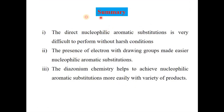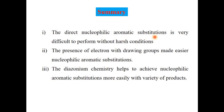In summary, direct nucleophilic aromatic substitution via the benzyne intermediate is very difficult, requiring harsh conditions, and benzyne itself is very unstable. The presence of electron-withdrawing groups activates the ring and allows aromatic substitution more easily via addition-elimination. Diazonium chemistry is very important and helps achieve nucleophilic aromatic substitution more easily with a variety of products. Thus, aromatic nucleophilic substitution can be most conveniently carried out through diazonium chemistry.